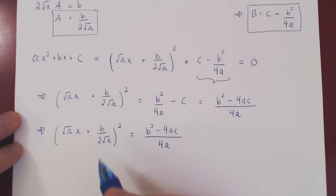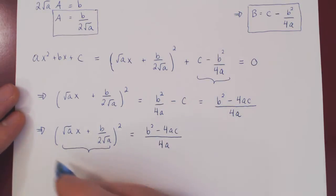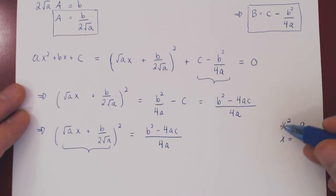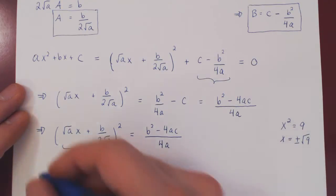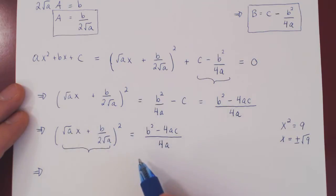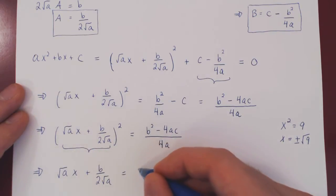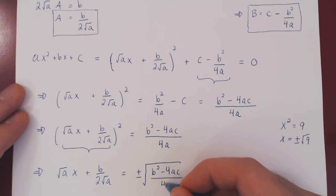How do we get rid of the square? We have this expression squared equals the right-hand side. We must be careful not to simply take the square root, as there are possibly two solutions. For example, if x squared equals 9, then x can be 3 or negative 3, so x is plus or minus root of 9. The same applies here: the expression inside the square must be plus or minus the square root of the right-hand side. So root of a times x plus b over 2 root of a equals plus or minus the square root of b squared minus 4ac over 4a.